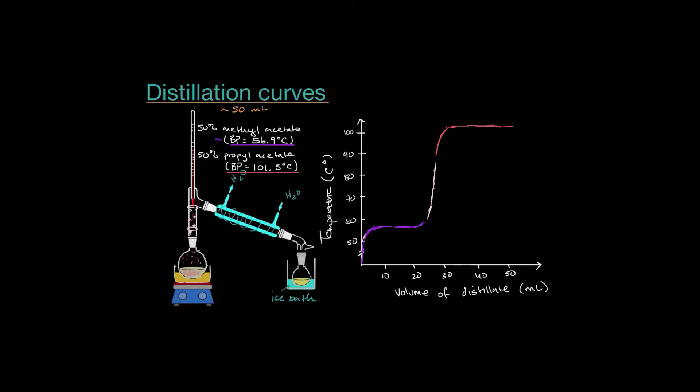People will oftentimes present you with a distillation curve and ask what the boiling points of the constituents are. You'd say the lower boiling point substance — you can see right here that we were able to get a lot of distillate when the bulb was at that temperature, so that must be the boiling point of substance one. You might even be able to identify it if you know the boiling points of different substances. And then you would identify the second plateau as the boiling point of substance number two.